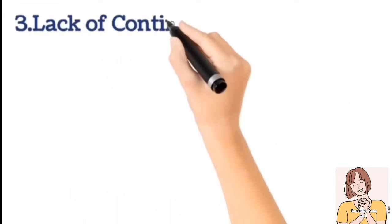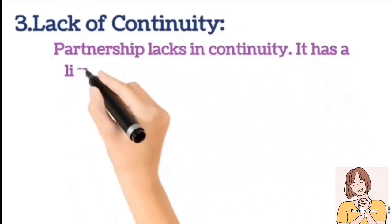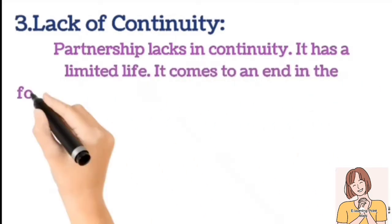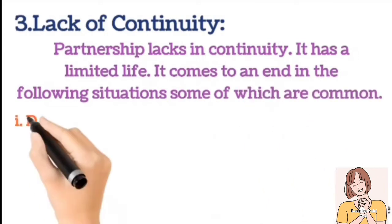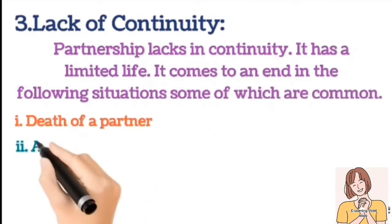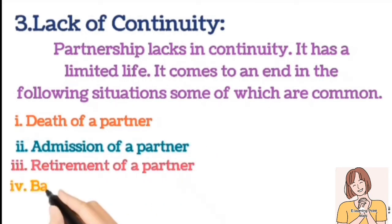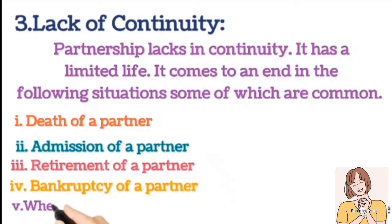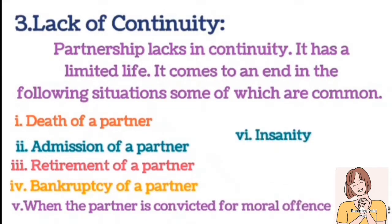Number 3: Lack of continuity. Partnership lacks in continuity — it has a limited life. It comes to an end in the following situations: number 1, death of a partner; number 2, admission of a partner; number 3, retirement of a partner; number 4, bankruptcy of a partner; number 5, when the partner is convicted for moral offense; number 6, insanity.